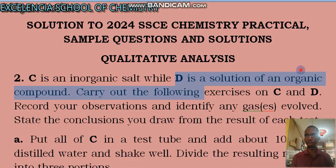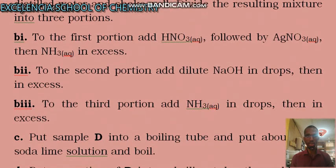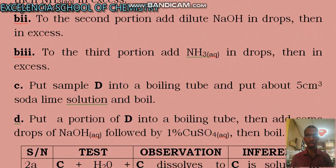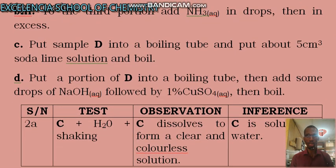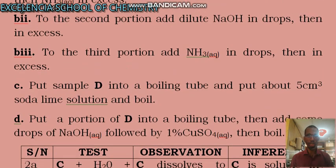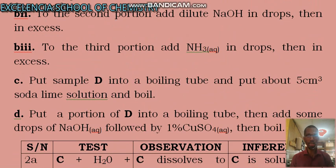And then we have the details. You can pause and read of these details. Question C here says, put sample D into a boiling tube and add about 5 cm³ of soda-lime solution and boil.